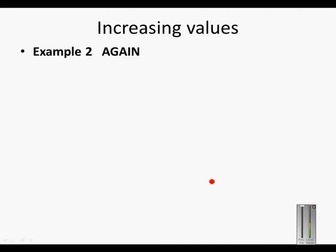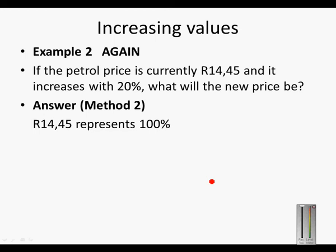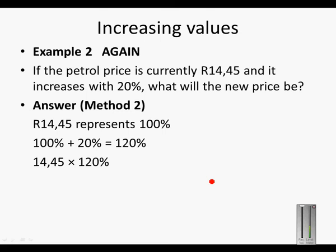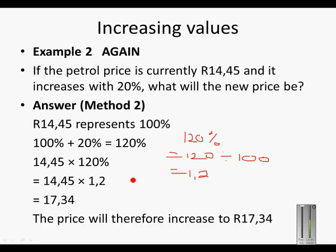Another method for this example, which is important because we're going to use it in later lessons this week: 14.45 represents 100% of the price. We increase that price with 20%, so 100% plus 20% is 120%. If we multiply 14.45 by 120%, which equals 1.2, that gives us 17.34. So the price will increase to R17.34.